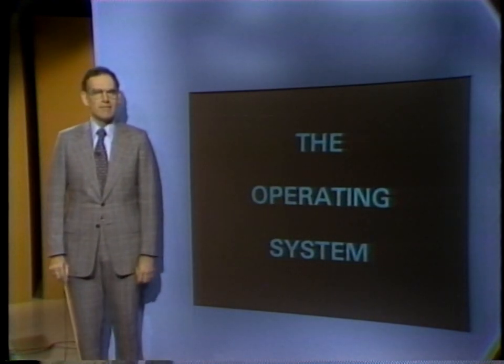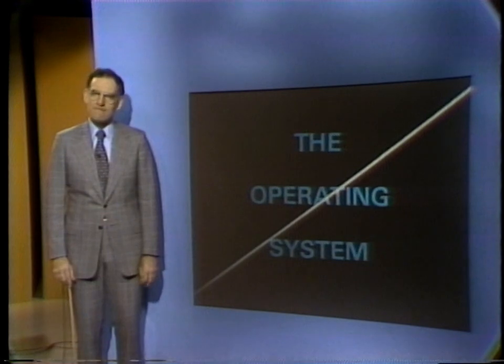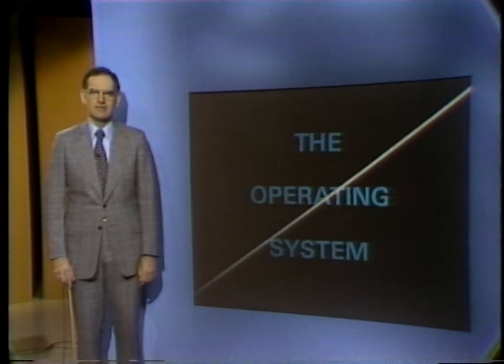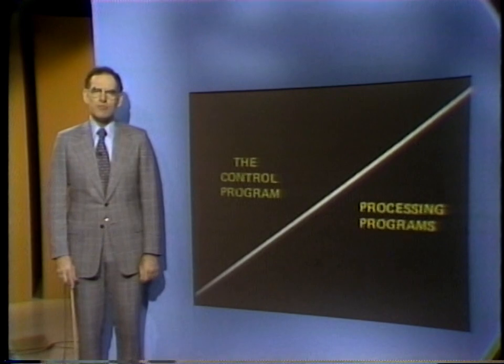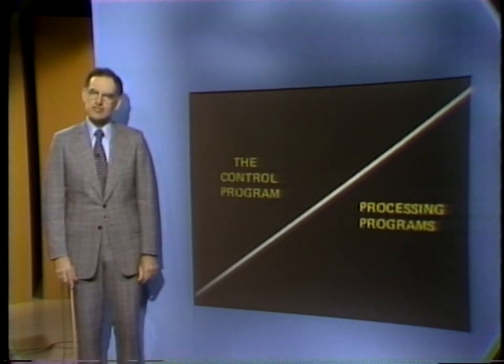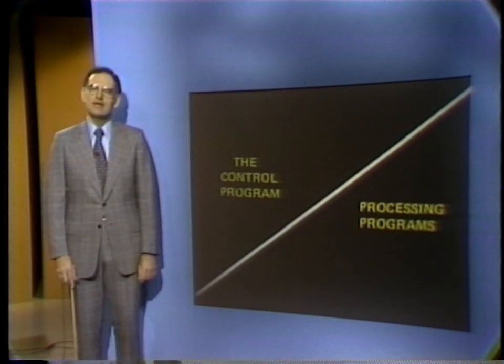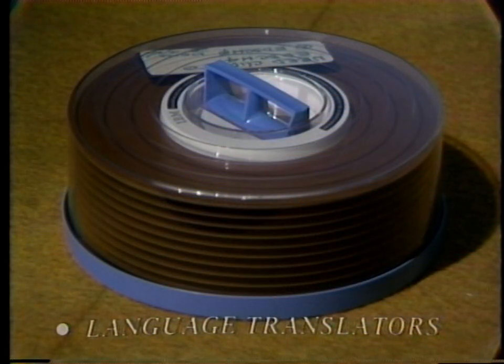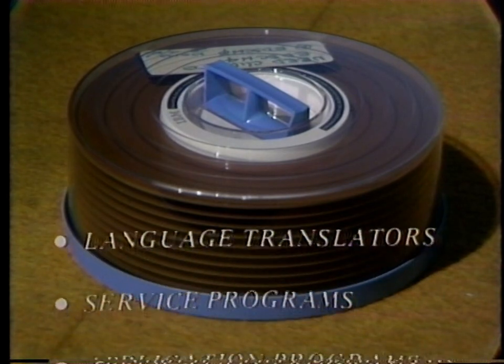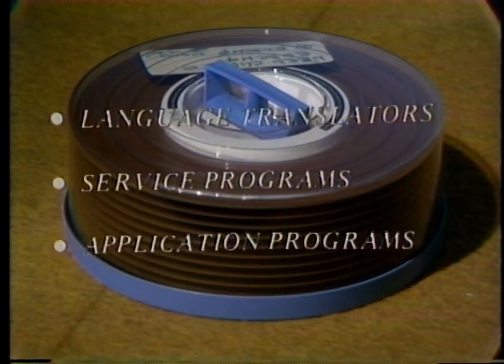Now let's look at the programs that make up the operating system. They fall into two broad categories: the control program and processing programs. The control program controls the processing of jobs and manages the resources of the data processing system. The processing programs process the daily workload of the installation. There are three kinds of processing programs: the language translators, service programs, and application programs.